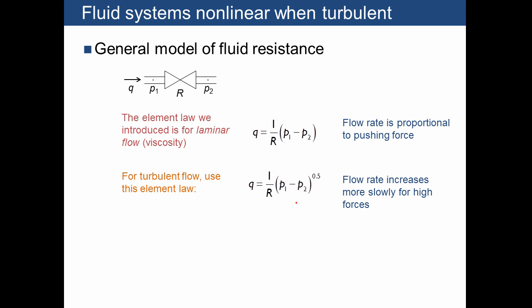But more generally, if you have turbulent flow, where you have Reynolds numbers that are say 10,000 and above, then you have a different formula, which is that 1 over R multiplies by the square root of (p1 minus p2). This says that as the pushing force increases, the flow rate increases, but it increases less slowly than the pushing force.